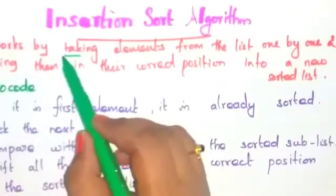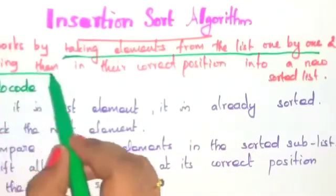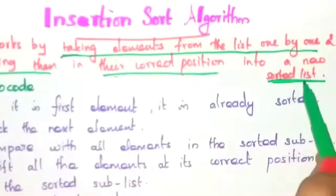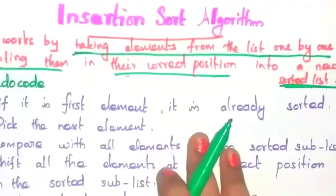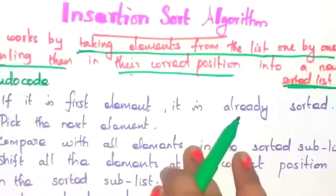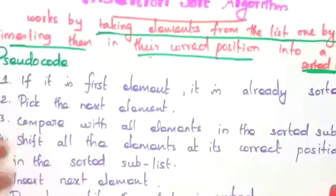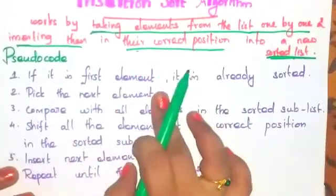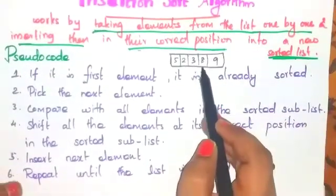So, this insertion sort algorithm takes the elements from the unsorted list one by one and inserts those elements at their correct position in the sorted list. Let us see this pseudo code. This is the unsorted array.